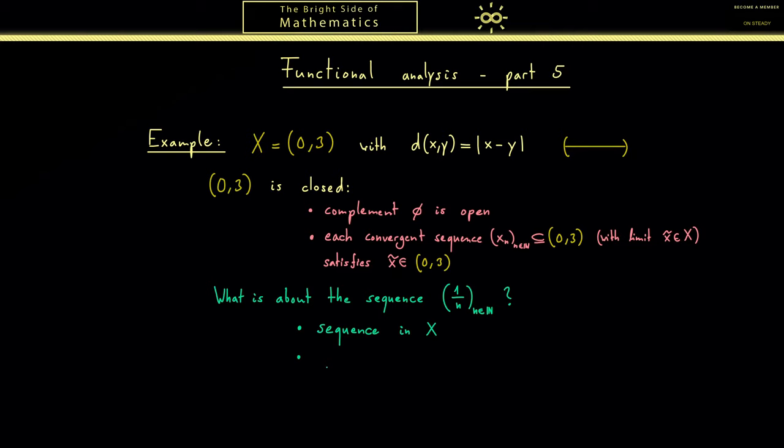And the distance between two members of the sequence, so maybe let's call them x_n, x_m, this number gets smaller and smaller when n and m get larger and larger. So we could write it in this way, but the important thing is that you see you get closer and closer to something with the sequence.